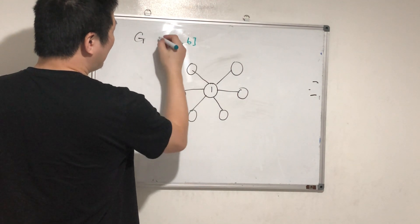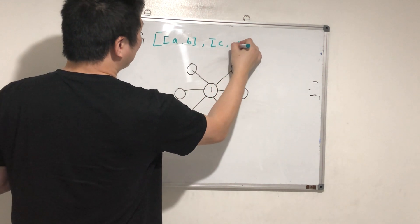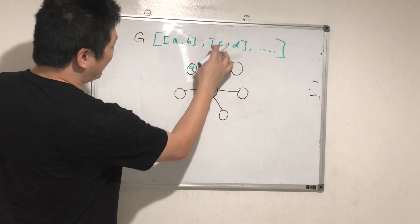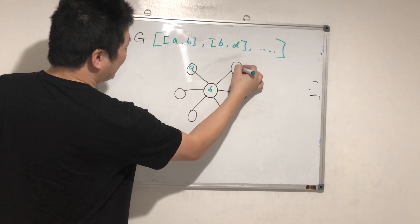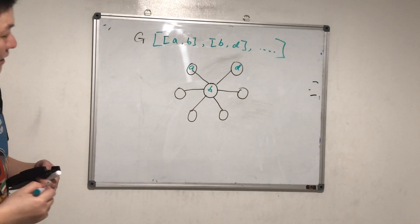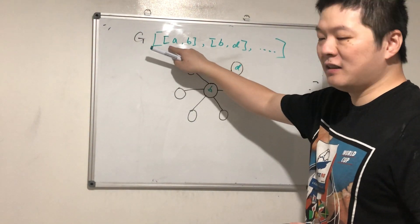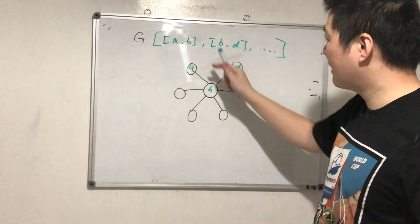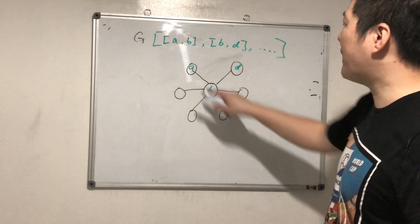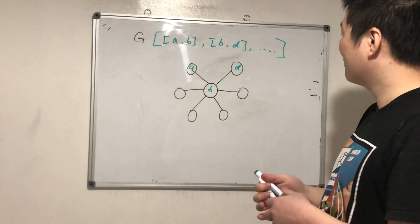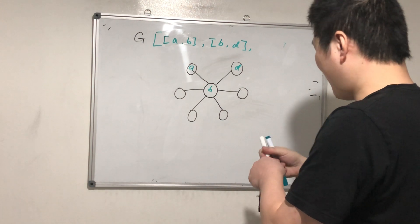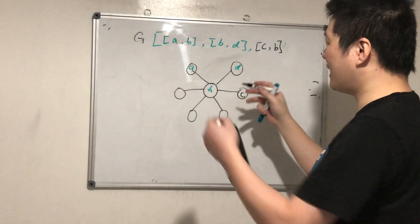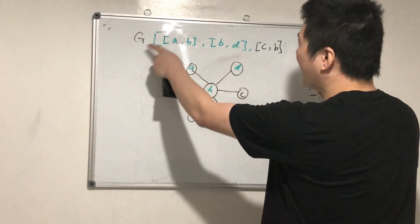You're given this graph G in the format of a list of edges — like [a, b], [b, d], something like that. Each entry is an edge from one vertex to another vertex. Given this graph, can you find the center node? For example, here we have C connected to B — the edge can be represented as C to B or B to C, it doesn't matter since it's undirected.